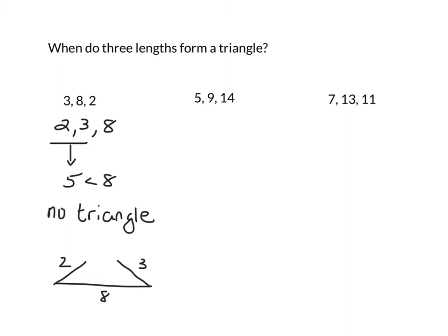Okay, let's now look at the second example, 5, 9, and 14. These are already organized from smallest to largest. So all I have to do now is take the two small ones and add them together. And when I add 5 and 9, I get 14.